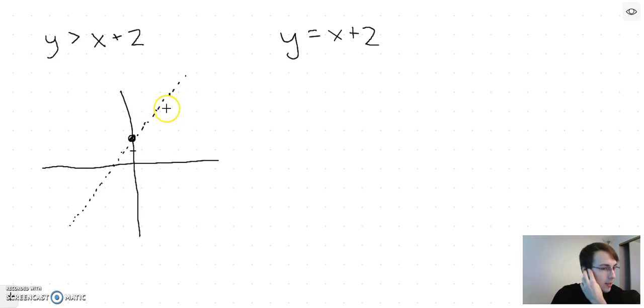So what points do satisfy this equation? It's either going to be totally this side or totally this side of the line. An easy way to check is by putting in a test point, like the origin, 0, 0. Does 0, 0 work? Let's check if 0 is greater than 0 plus 2. No, because that says 0 is bigger than 2.